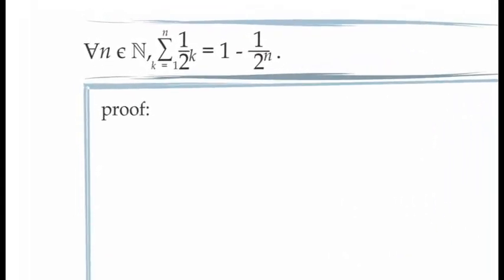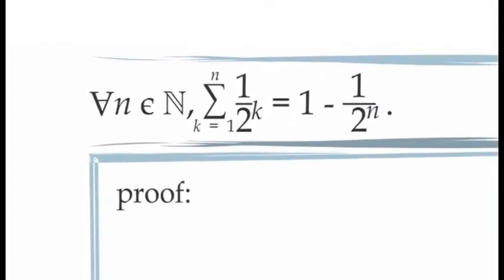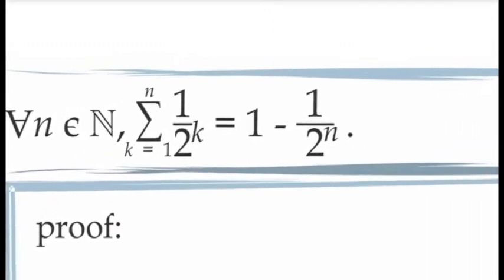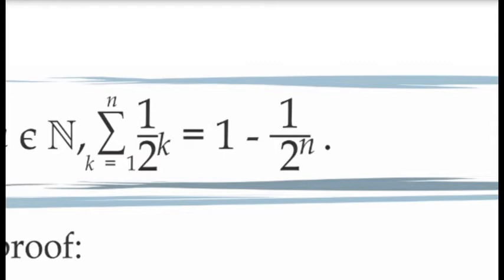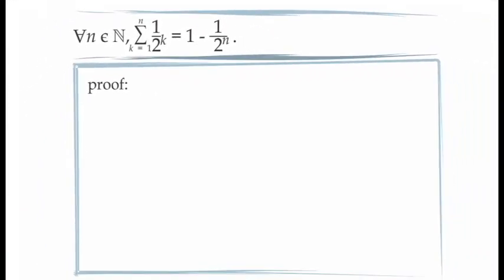In fact, this gives us a closed formula for the sum of this sequence. We have, for all n in the natural numbers, the sum as k goes from 1 to n of the sequence f(k) = 1 over 2 to the exponent k will equal 1 minus 1 over 2 to the exponent n, which is the distance the runner still has left to run. To prove this, we're going to use the principle of mathematical induction, which means we can start by considering the set of those natural numbers for which this closed form formula holds.